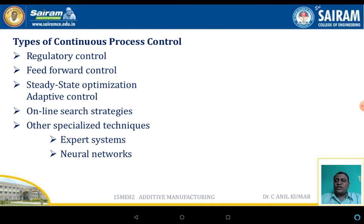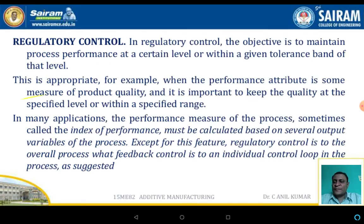The types of continuous process control systems are: regulatory control systems, feed forward control systems, steady state control systems, adaptive control systems, online search strategies, and other specialized techniques like expert systems and neural networks.